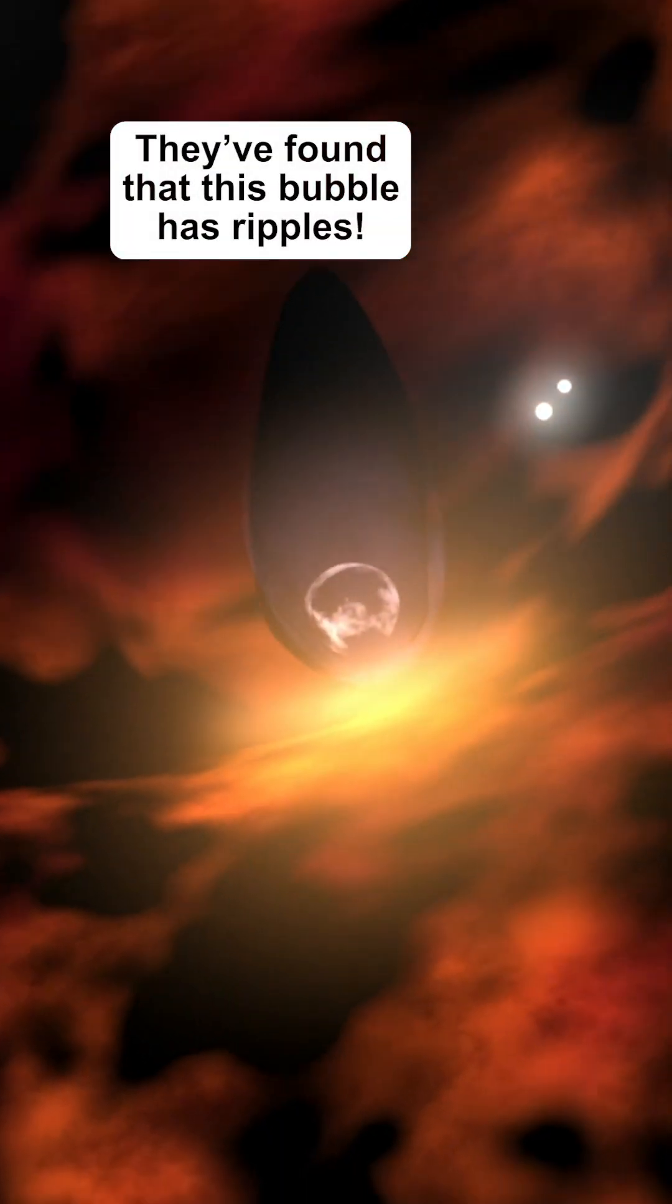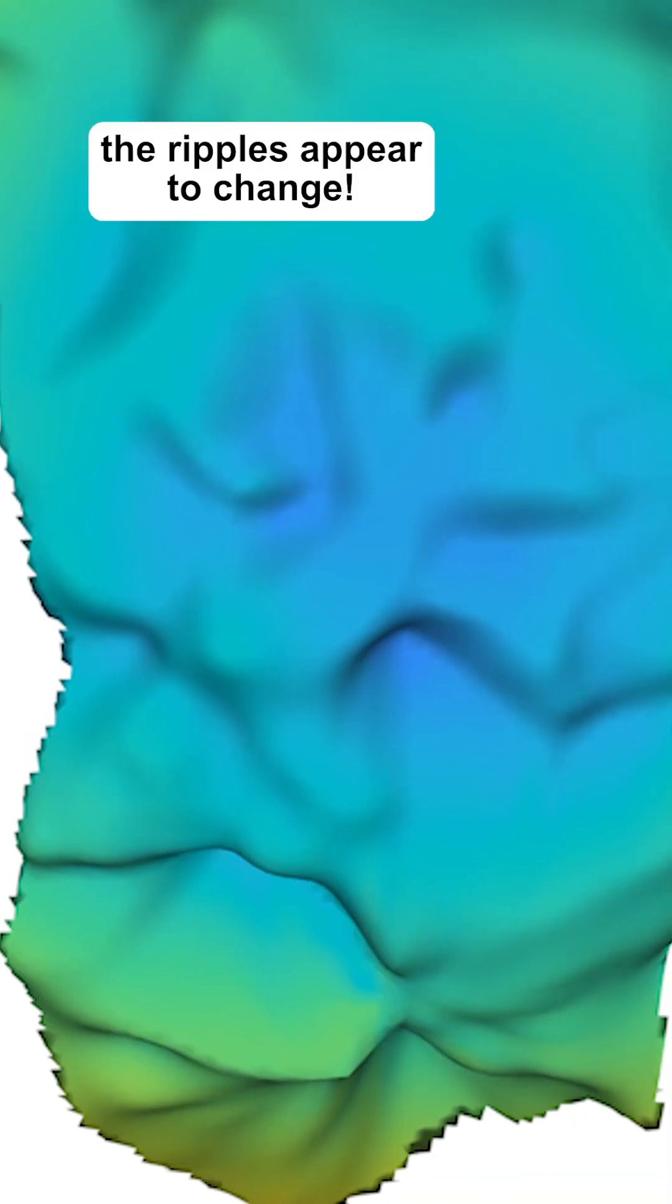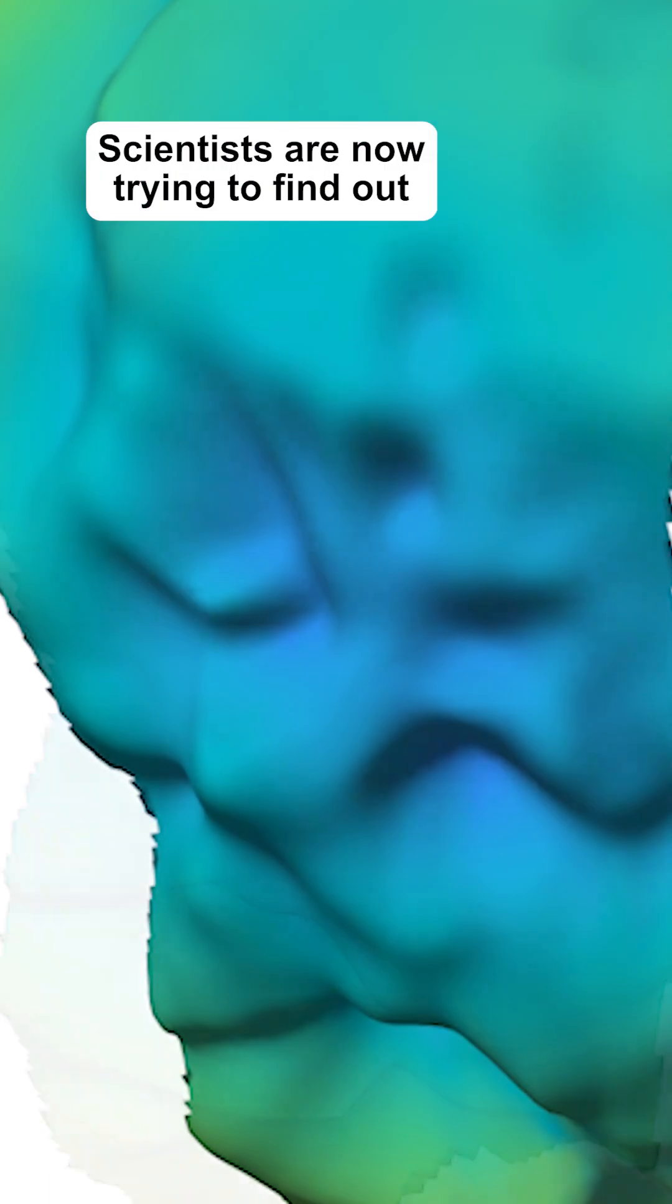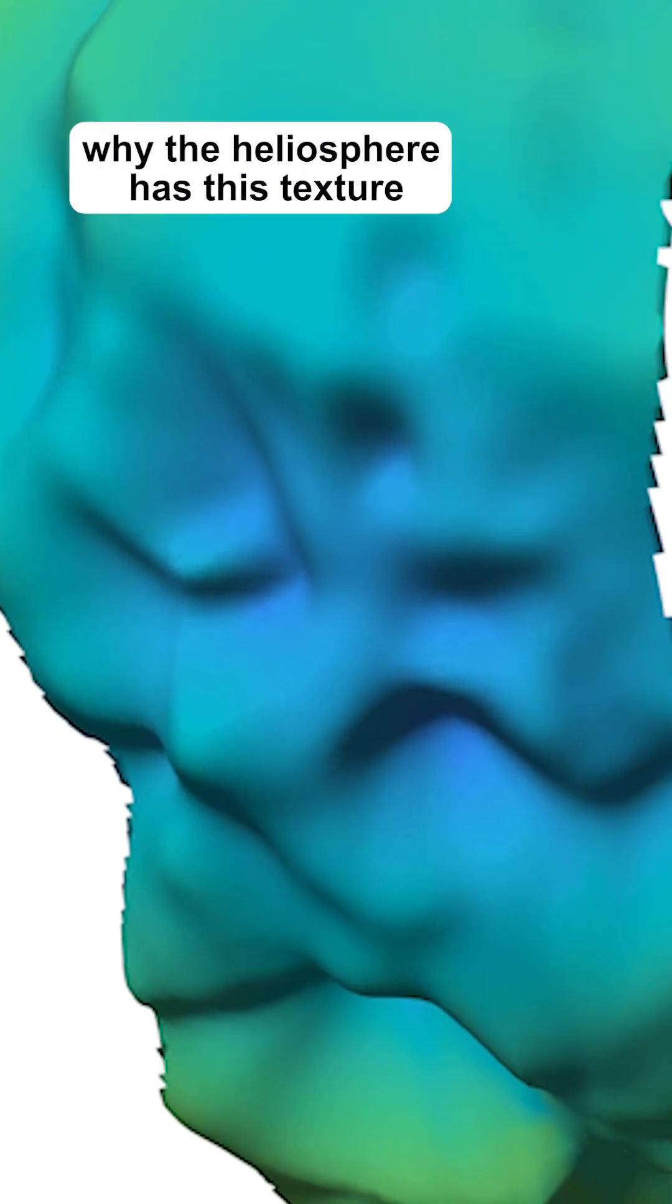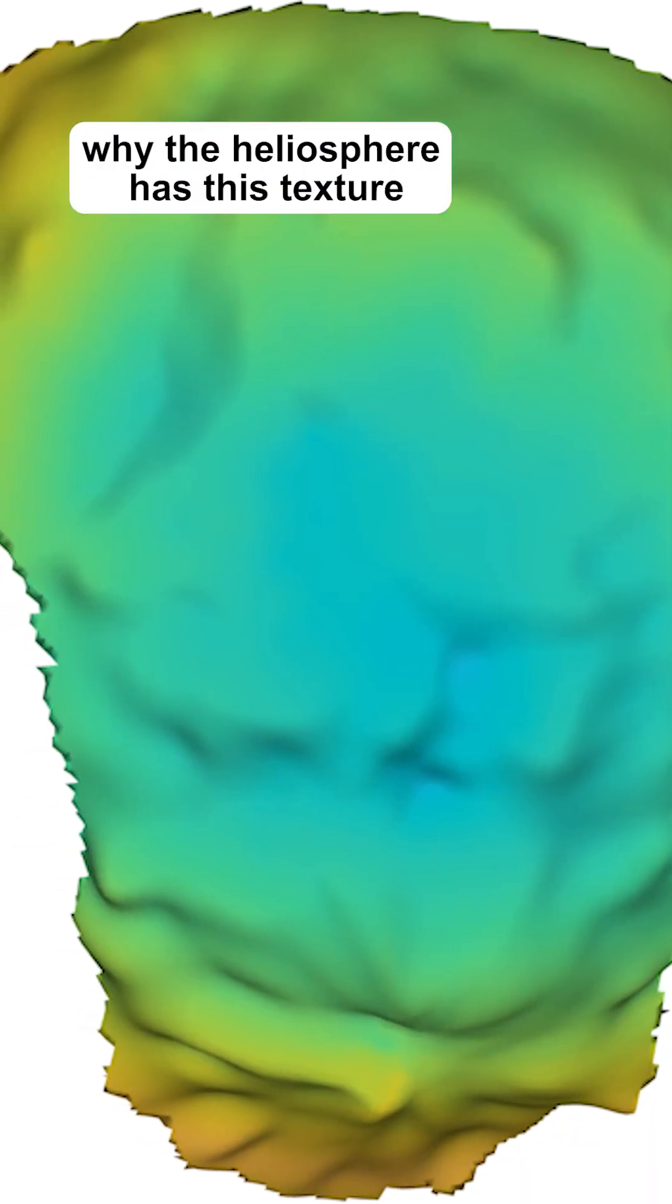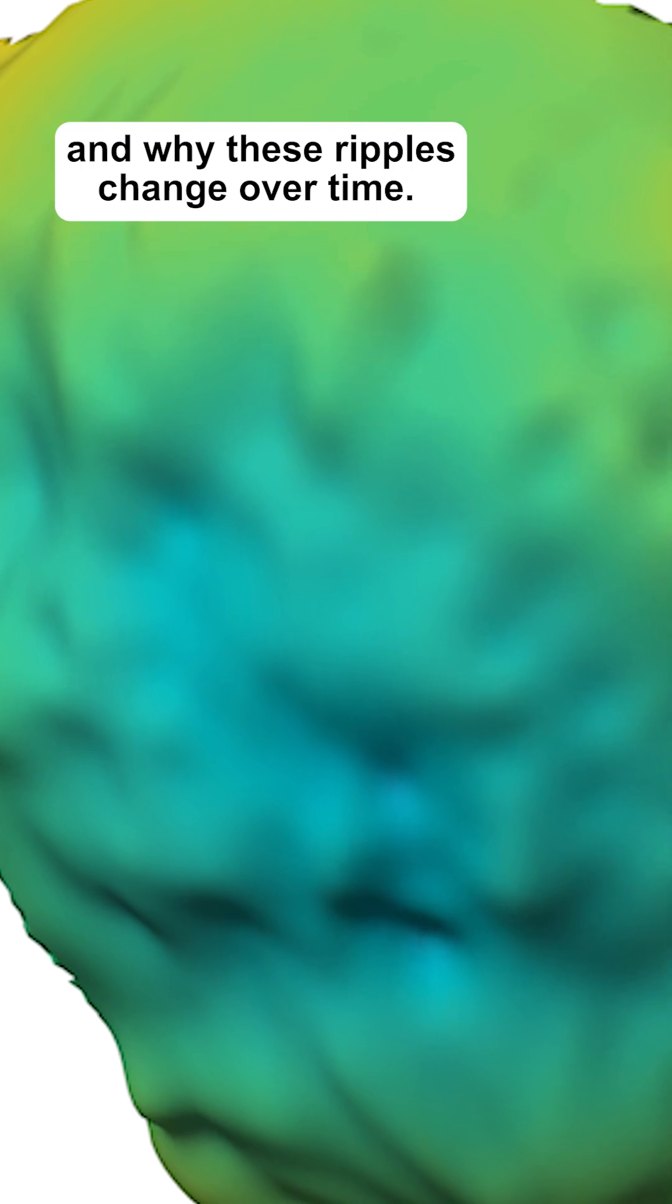They found that this bubble has ripples, and not only that, the ripples appear to change. Scientists are now trying to find out why the heliosphere has this texture and why these ripples change over time.